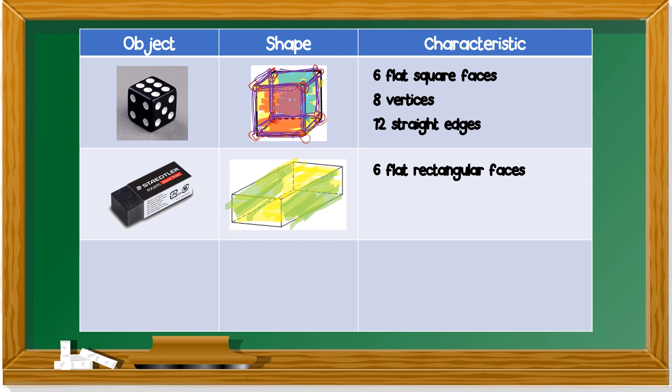How many vertices? Let's count. One, two, three, four, five, six, seven, eight. Eight vertices. How about the straight edges? One, two, three, four, five, six, seven, eight, nine, ten, eleven, twelve. Twelve straight edges.